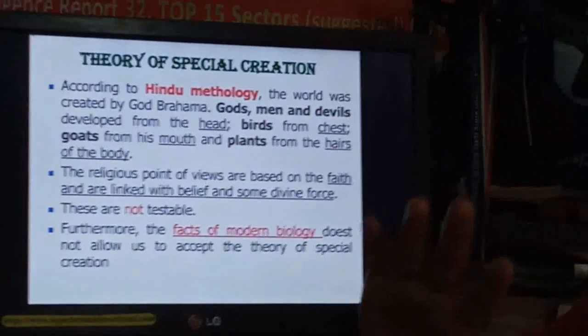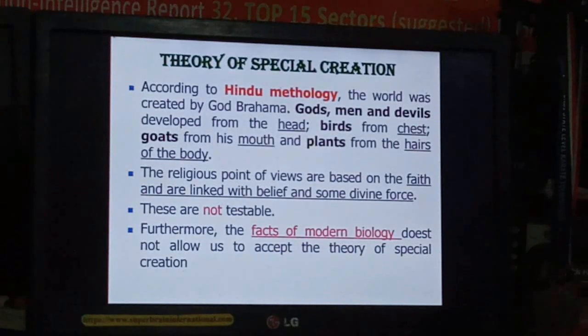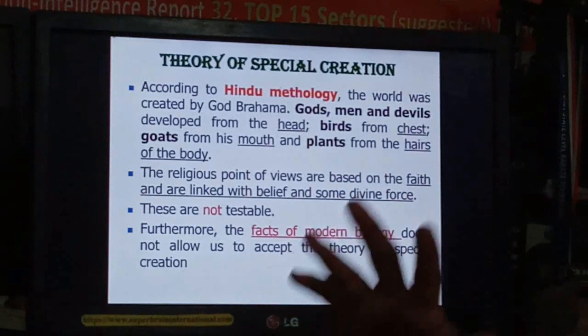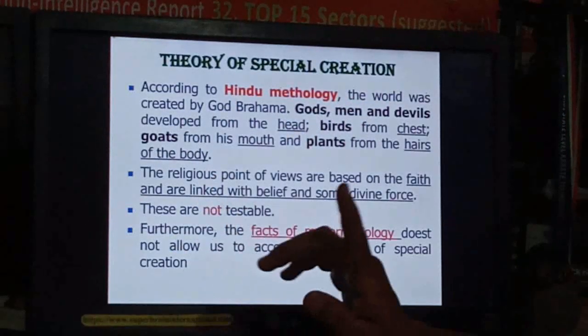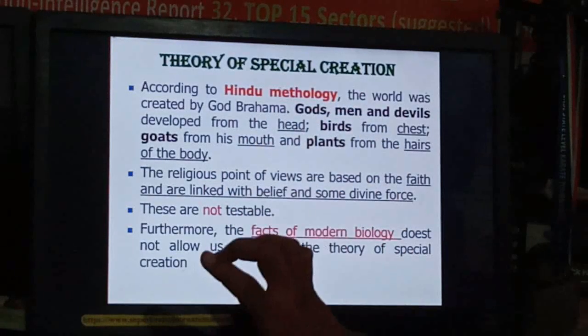According to Hindu mythology, God Brahma created this whole world, this whole Earth and all the organisms on it. According to Hindu mythology, there are three gods: Brahma, Vishnu, and Mahesh. Brahma is the creator of life, Vishnu is the caretaker, and Shiva is the destroyer. Once life is formed, it can't remain as it is — when it is destroyed, then new life is formed. These three gods balance this universe.